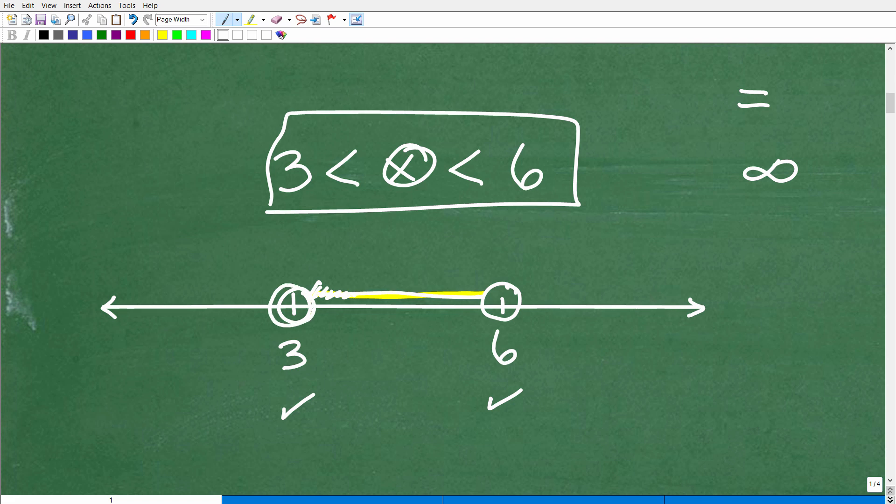So greater than 3 and less than 6 are all these numbers. So this is the way you would graph the solution to this inequality is we plot these numbers 3 and 6, and then we draw a line right there, and these are open circles. Right like so. If we had equal to, you would fill in these circles like so.